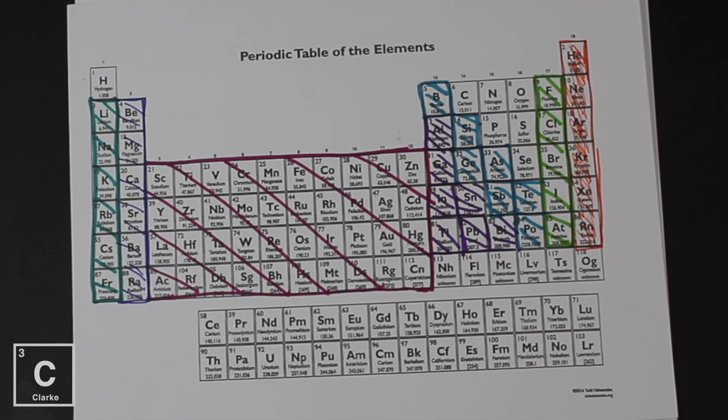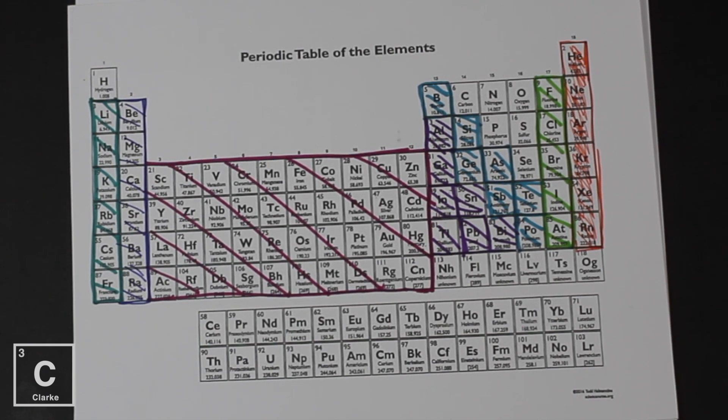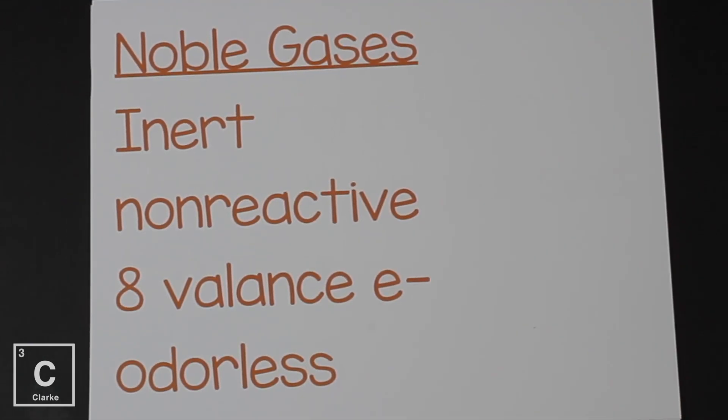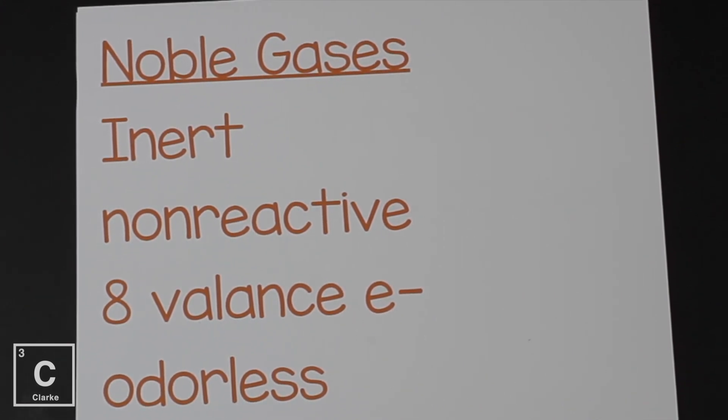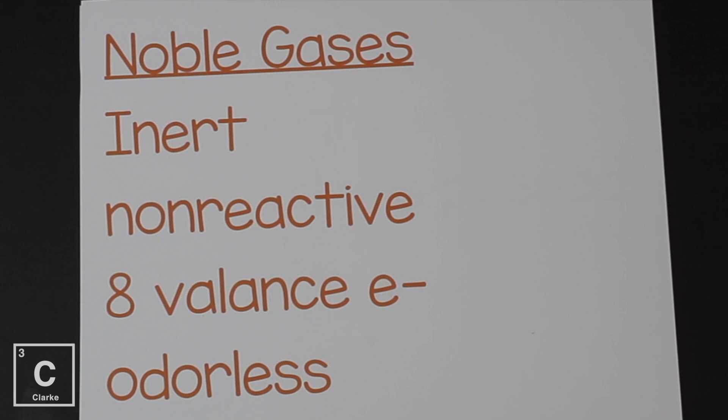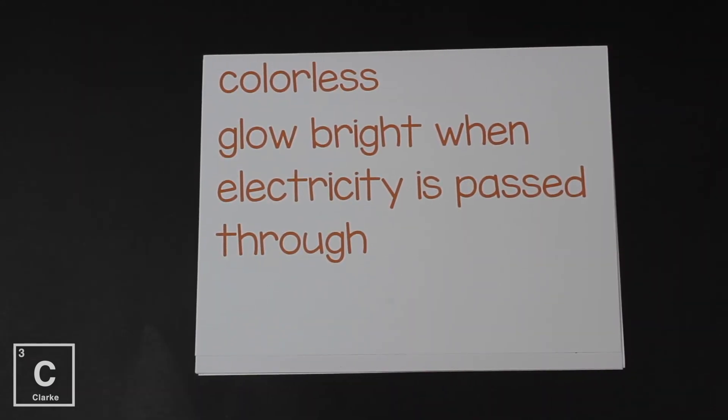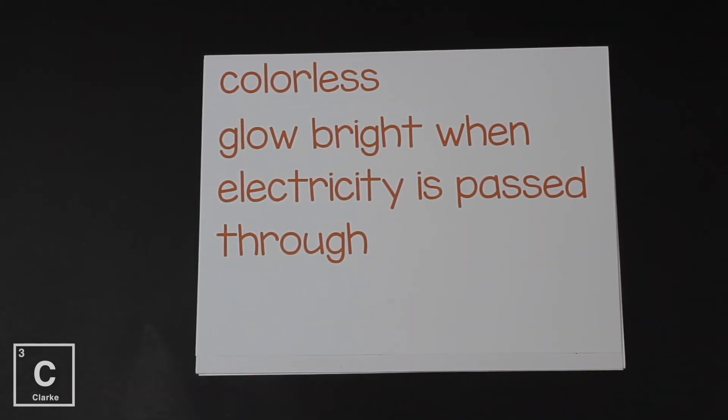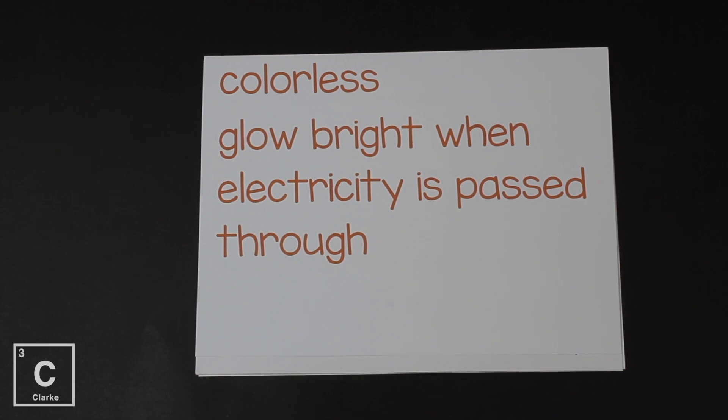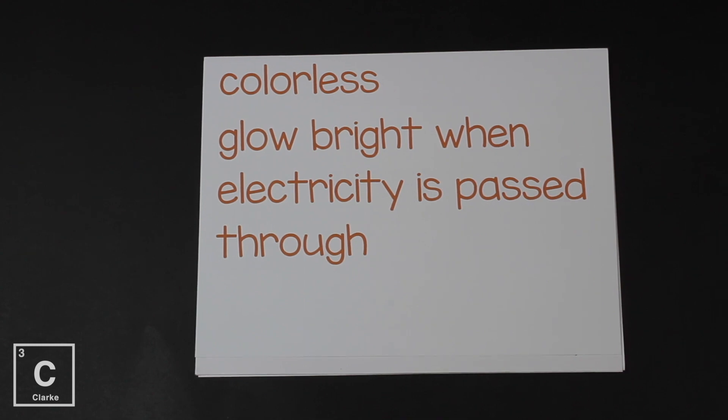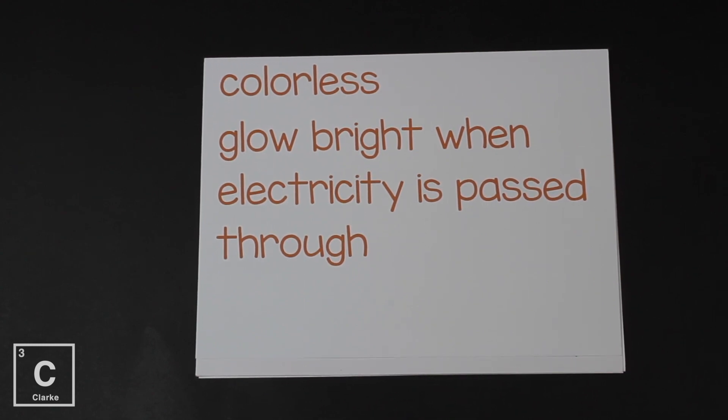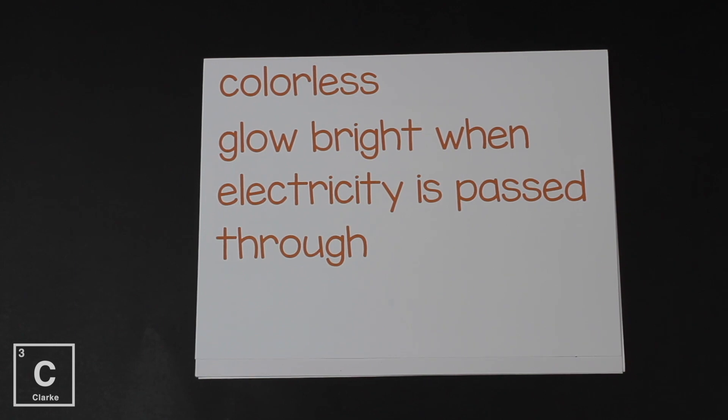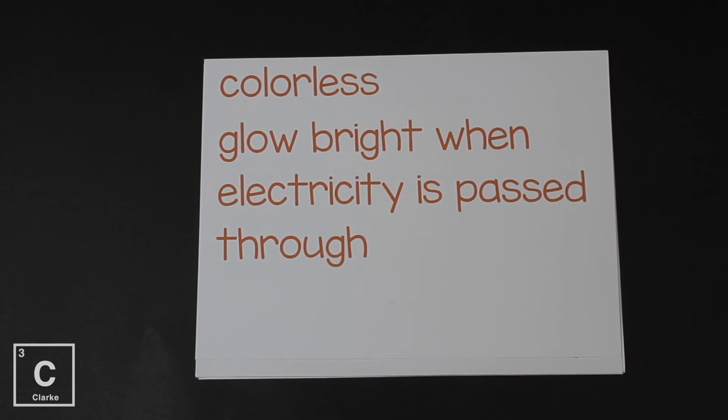Group 18 is the noble gases. Noble gases are inert, meaning non-reactive. They have eight valence electrons. They're odorless and colorless and glow bright when electricity is passed through them. Think of a neon sign. Most of the time when we see different colored neon signs, we call them all neon signs, but neon signs are specific to neon gas in the tube running electricity through. When you see different colors, that's different noble gases.